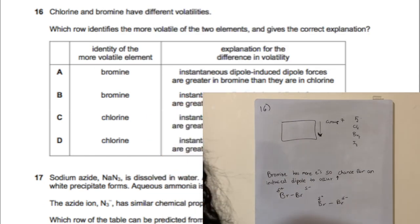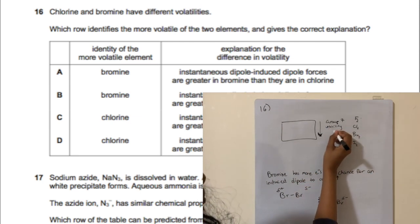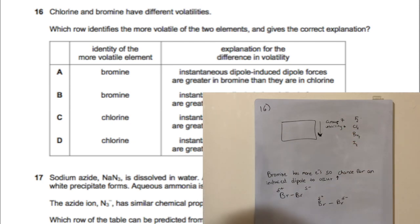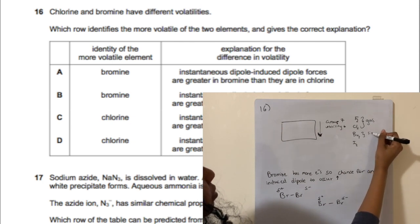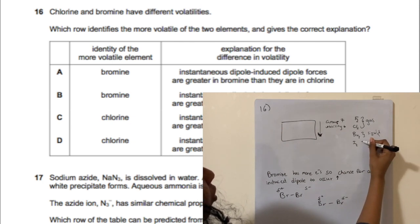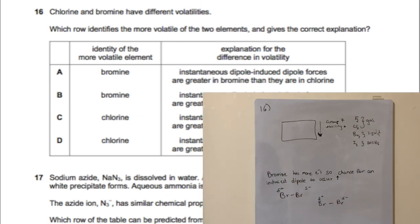For question 16, volatility decreases as you go down the halogen group — fluorine and chlorine are gases at the top, bromine is a liquid, and iodine is a solid below that. This rules out options A and B; the more volatile one is chlorine.